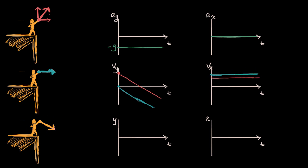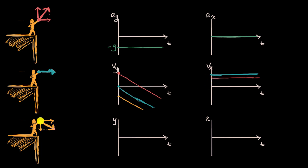Now the third scenario. What is our initial y velocity? It starts negative — the ball is thrown downward — and it's only going to get more and more negative once the individual lets go, because of that constant negative acceleration. In the x direction, it looks very similar to the blue scenario. And once again, the velocity in the x direction stays constant because in all three scenarios, you have zero acceleration in the x direction.